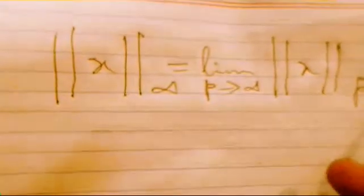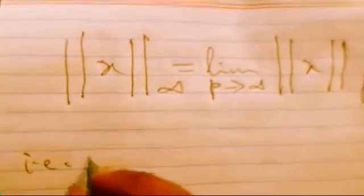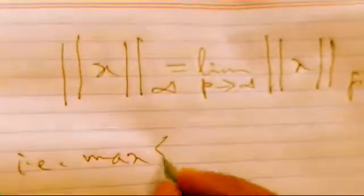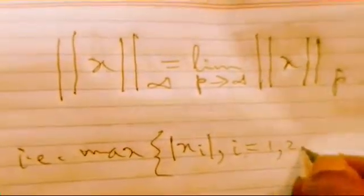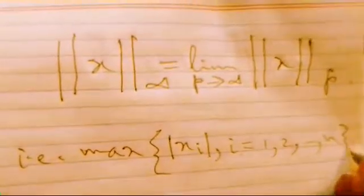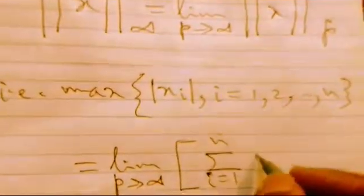How to prove this result? Alternatively, this statement can also be written as maximum of mod of x_i, where i runs from 1 to n, that is a finite quantity. We are taking an infinite sense as the limit as p tending to infinity of summation i equals 1 to n of x_i to the power p, whole to the power 1 by p.